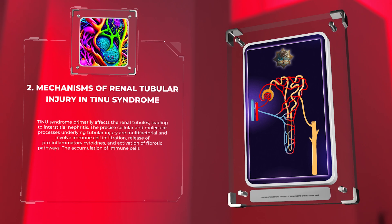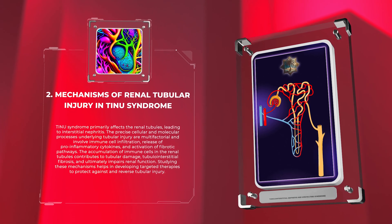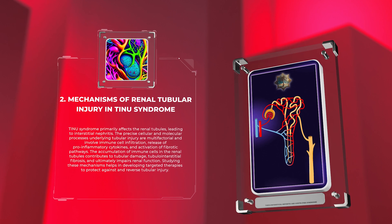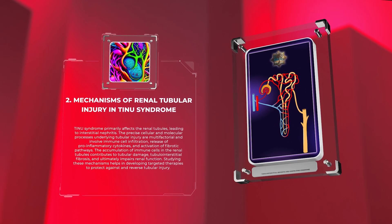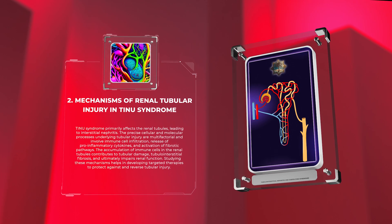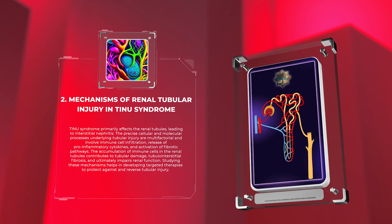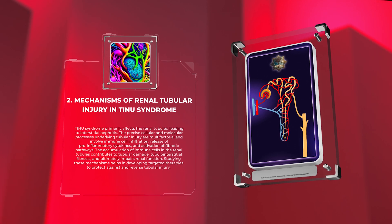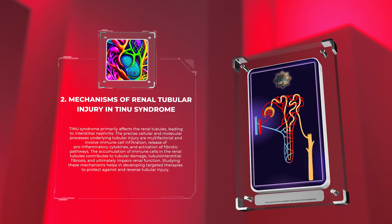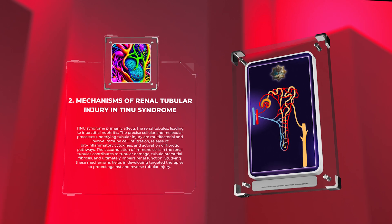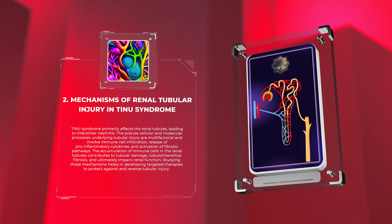TINU syndrome primarily affects the renal tubules, leading to interstitial nephritis. The precise cellular and molecular processes underlying tubular injury are multifactorial and involve immune cell infiltration, release of pro-inflammatory cytokines, and activation of fibrotic pathways. The accumulation of immune cells in the renal tubules contributes to tubular damage, tubulointerstitial fibrosis, and ultimately impairs renal function. Studying these mechanisms helps in developing targeted therapies to protect against and reverse tubular injury.